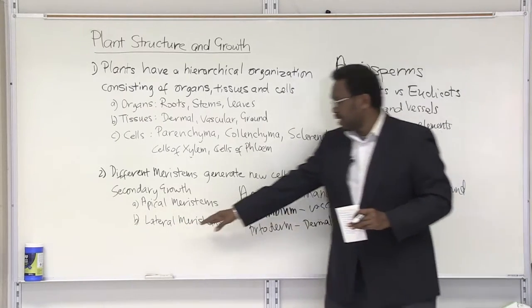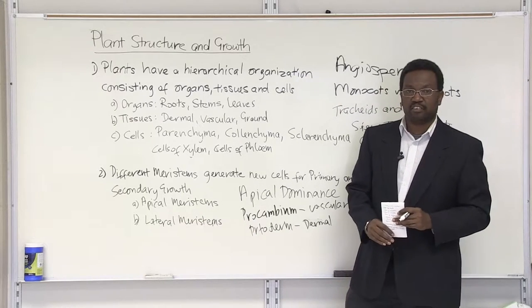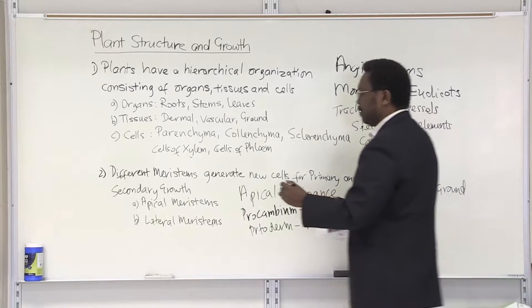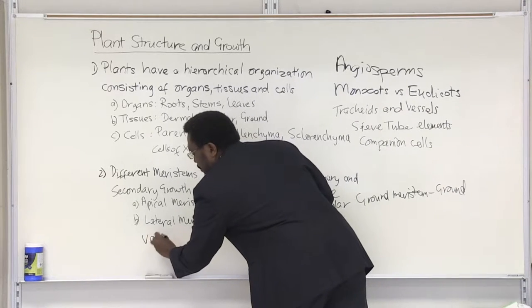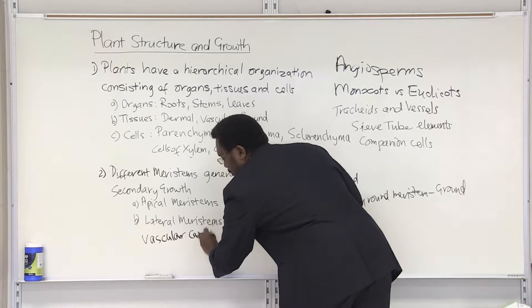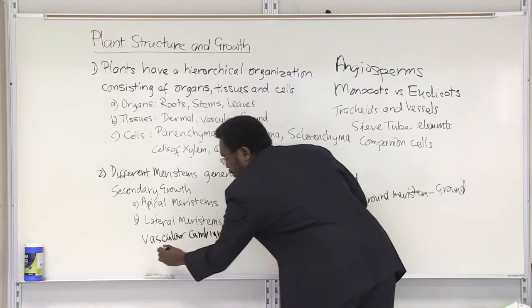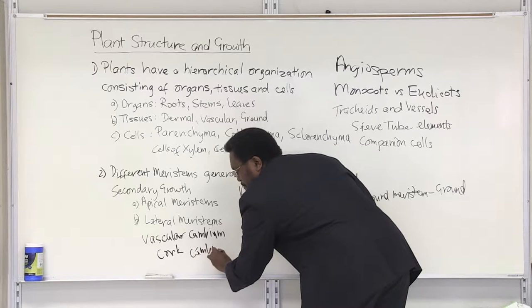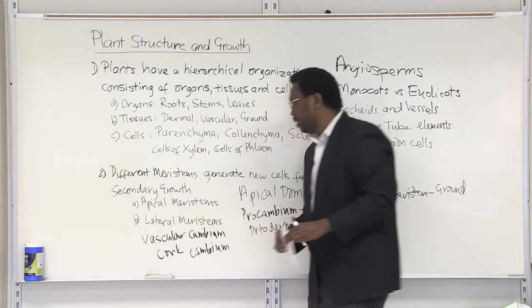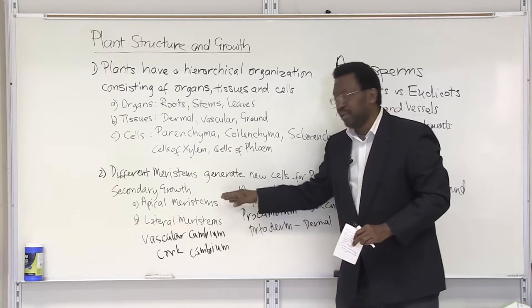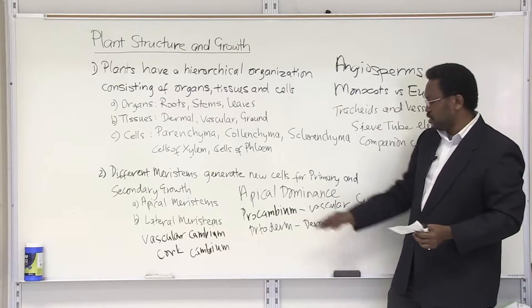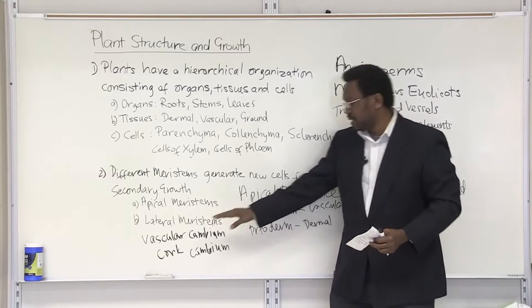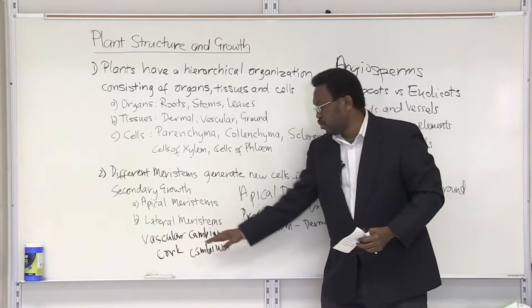In terms of secondary growth, we've got lateral meristems responsible for that secondary growth. There are two types: vascular cambium and cork cambium. Once you hear the word cambium, think meristematic tissue. Procambium gives rise to vascular tissue, and in terms of lateral meristems, we have vascular cambium and cork cambium.